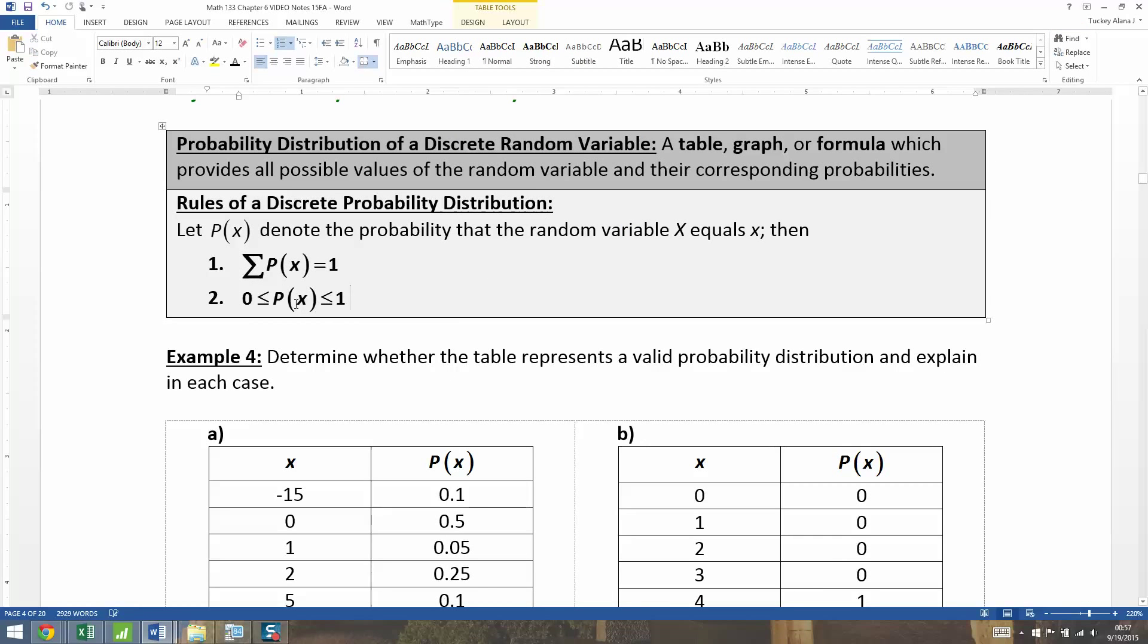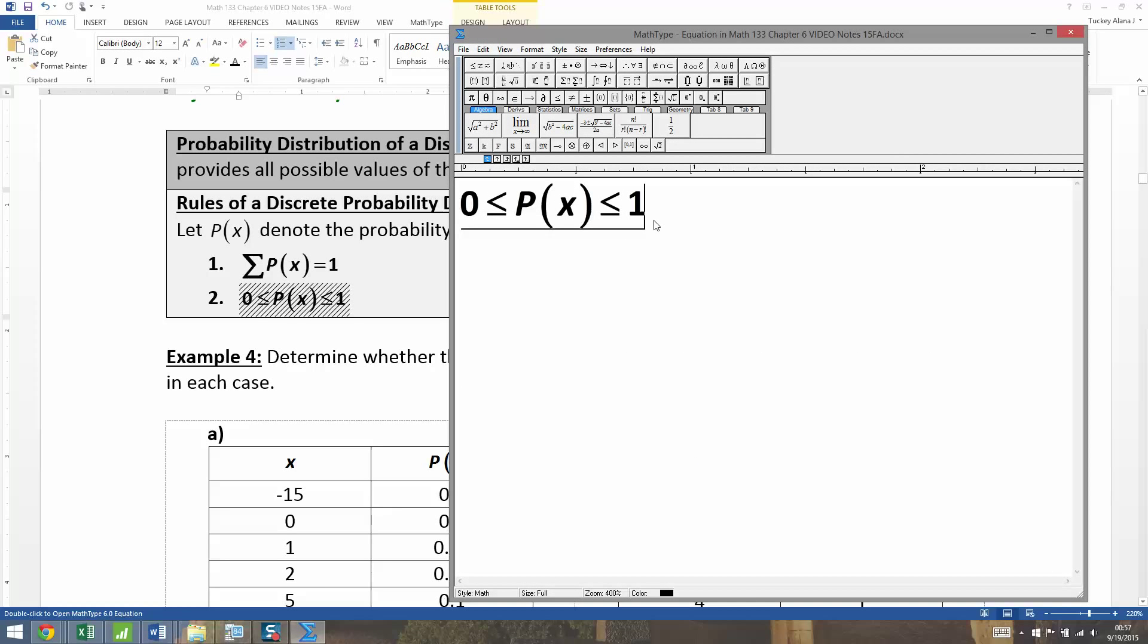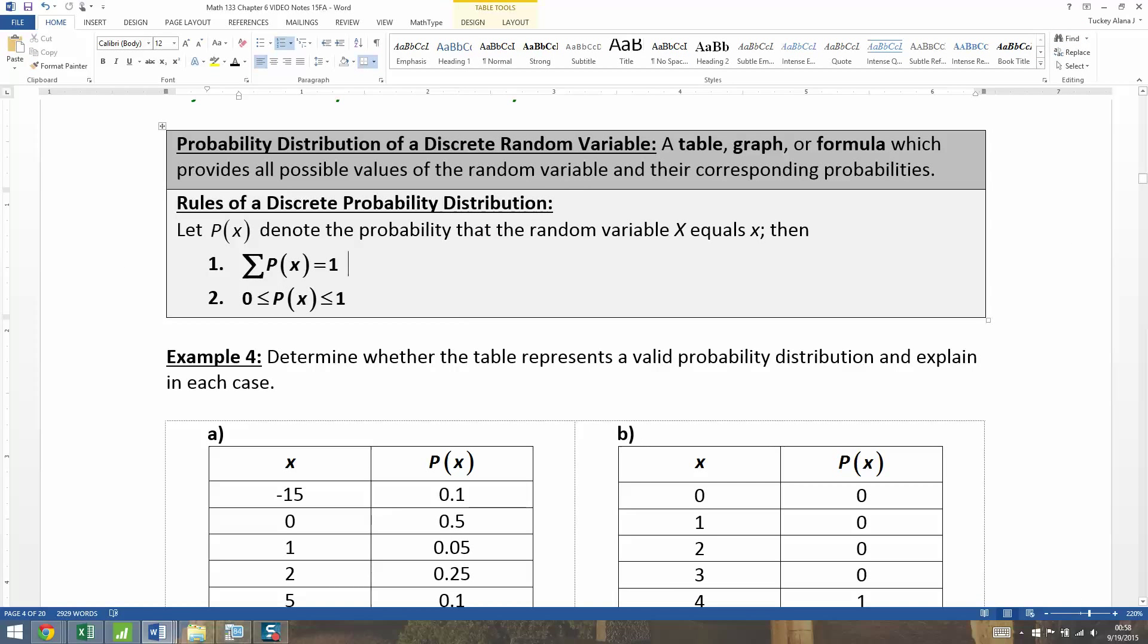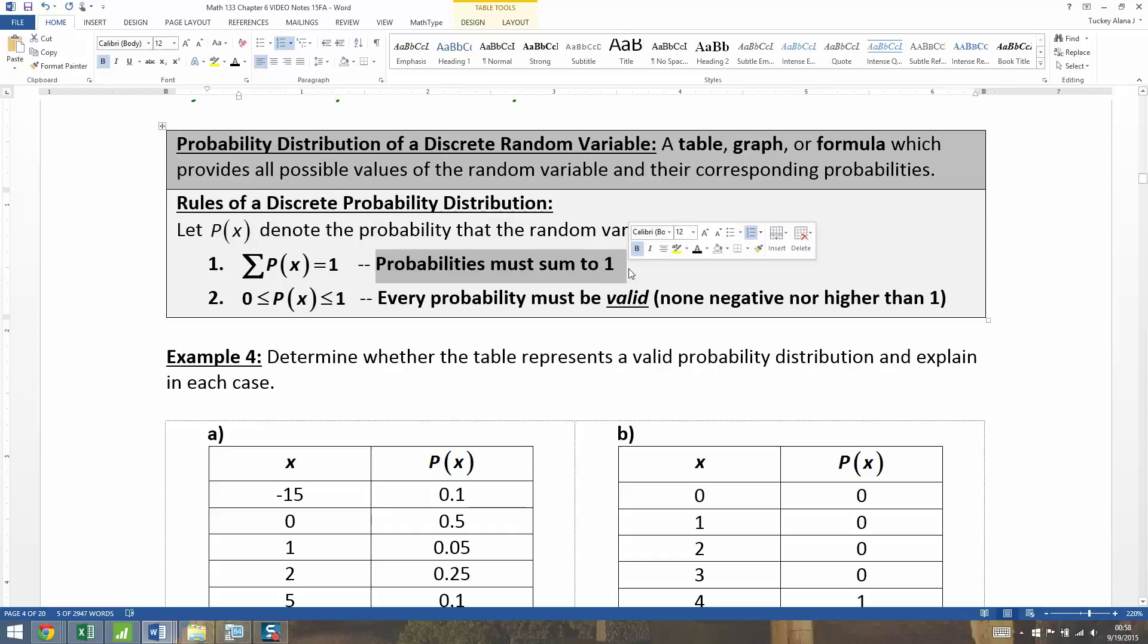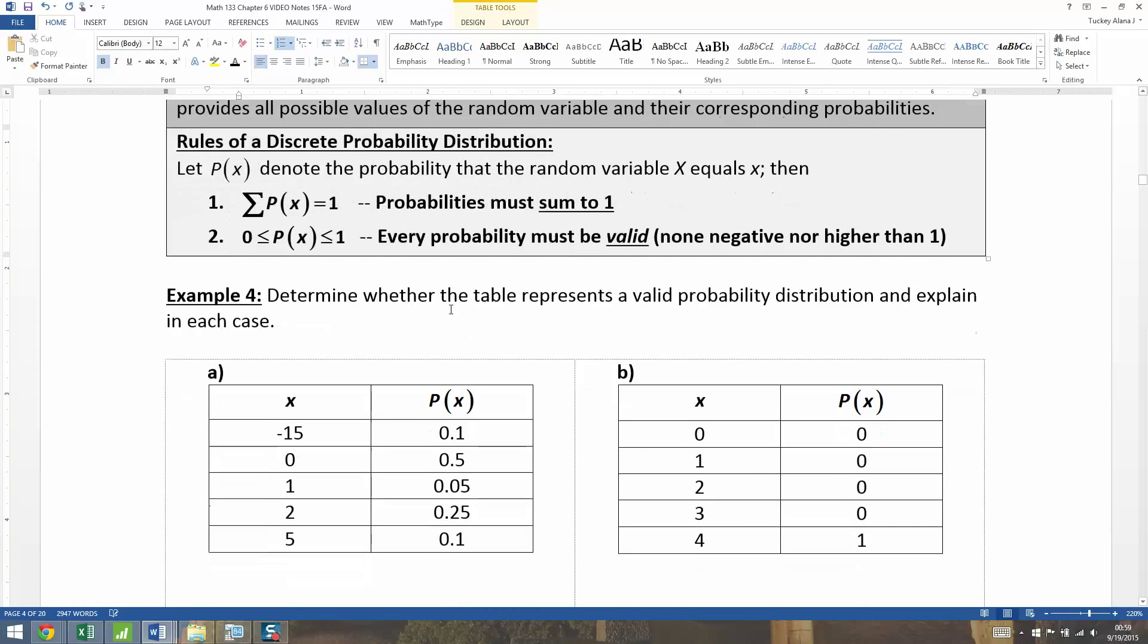And the next rule is that all your probabilities have to, in fact, be valid probabilities. So they have to be between 0 and 1. The highest you could have is 1, the lowest you could have is 0. So the first rule is that the probabilities must sum to 1. And the next rule is that every probability must be valid, that you can't have any negative nor higher than 1. In other words, they have to be between 0 and 1 inclusive. You can include 0, you can include 1, but nothing higher than 1, nothing lower than 0.